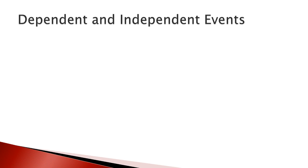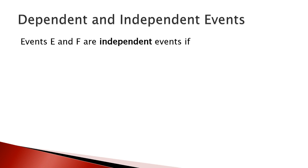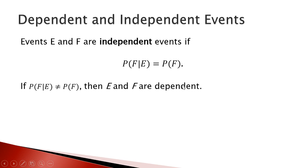Now we talked about dependent and independent events. Events E and F are independent if the probability of F given E equals the probability of F. And if the probability of F given E is not equal to the probability of F, then E and F are dependent.